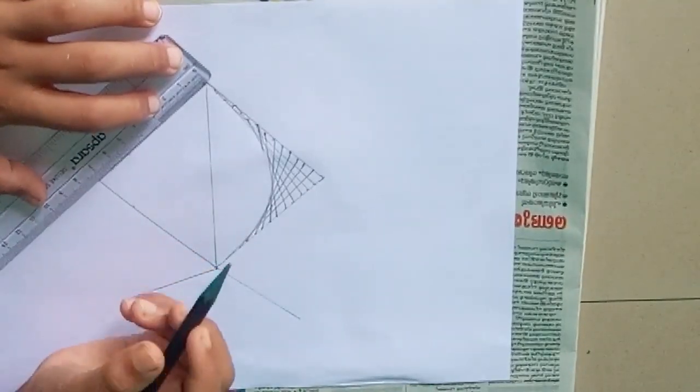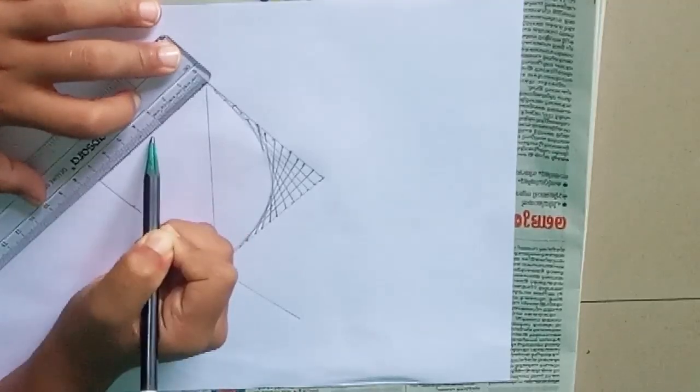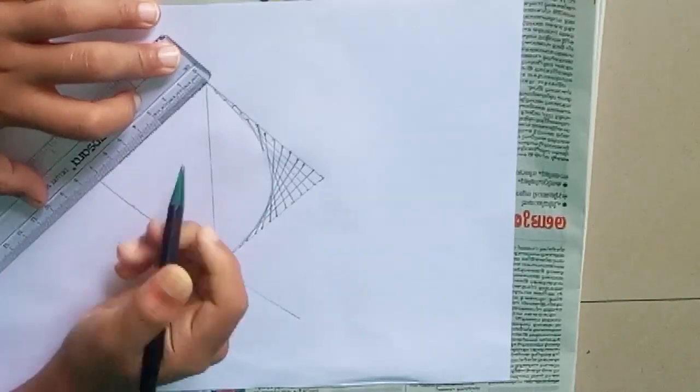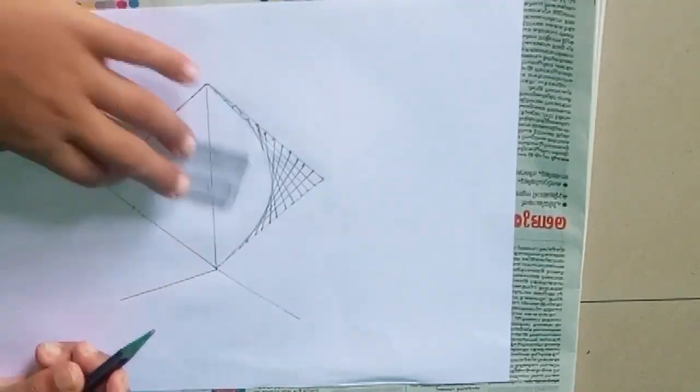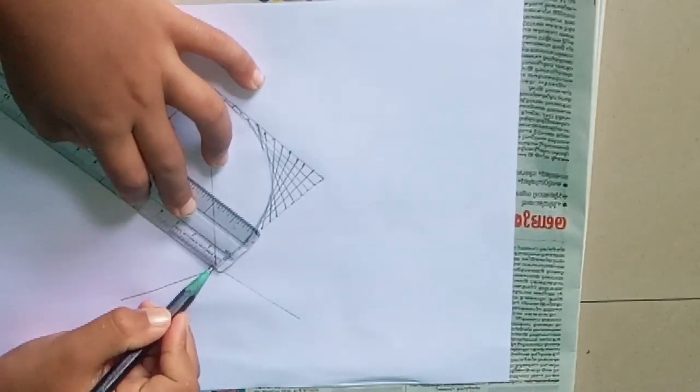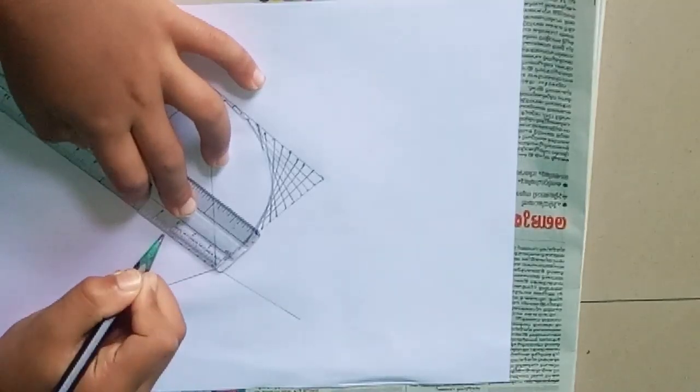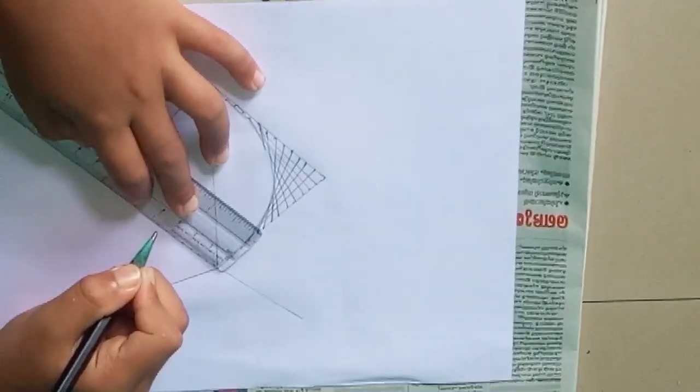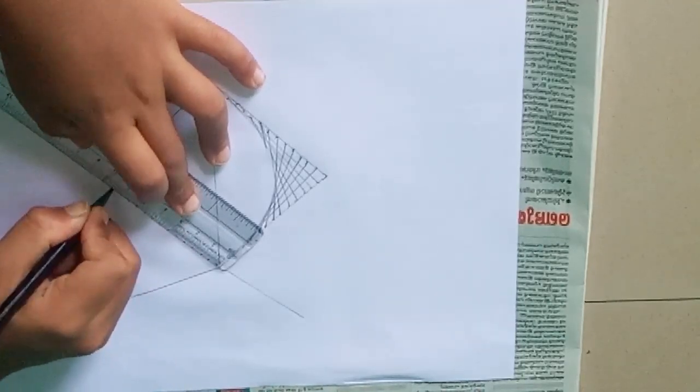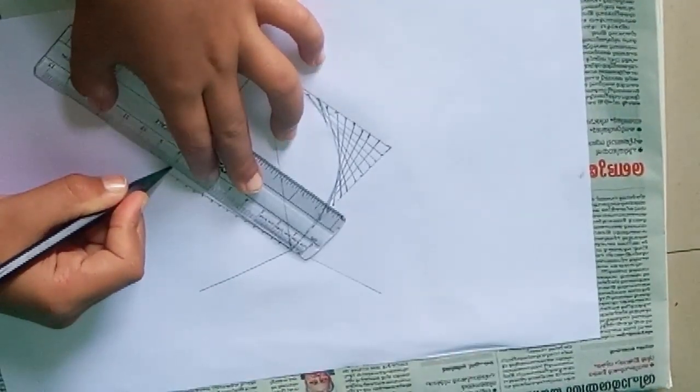Then put 14 dots on these two sides and join them in this way. Then join them this way.